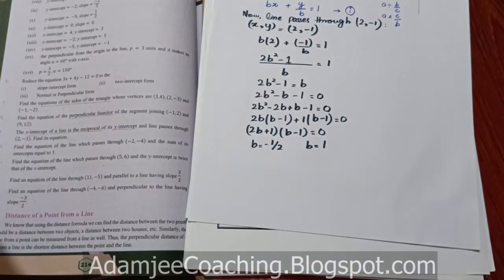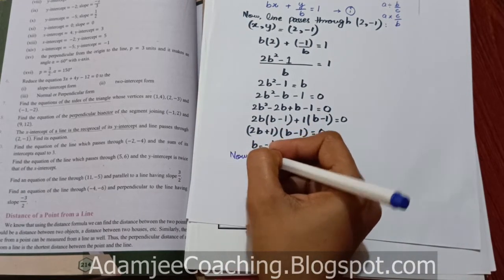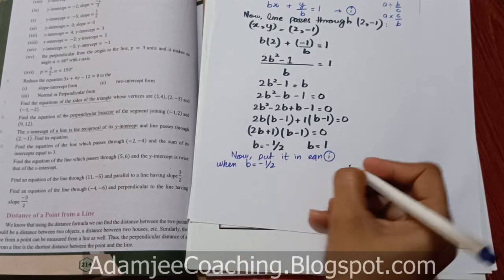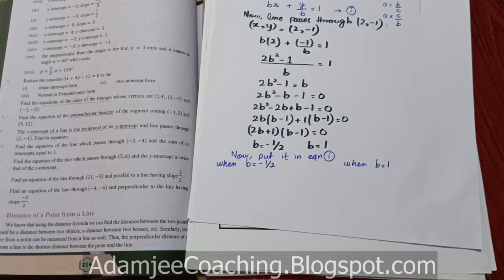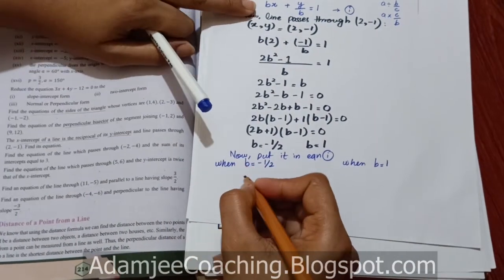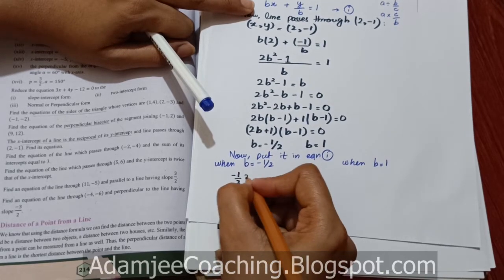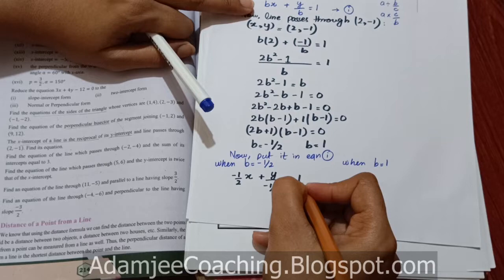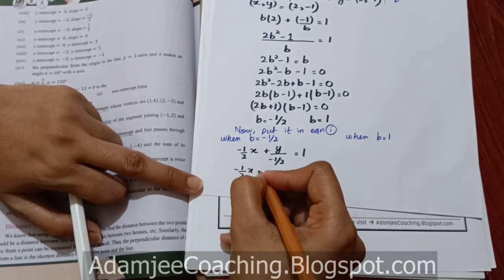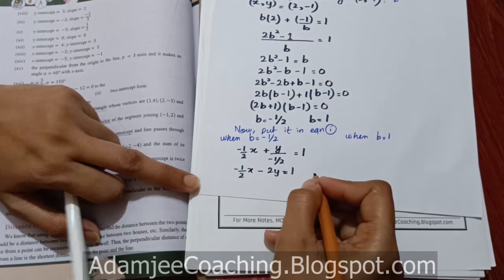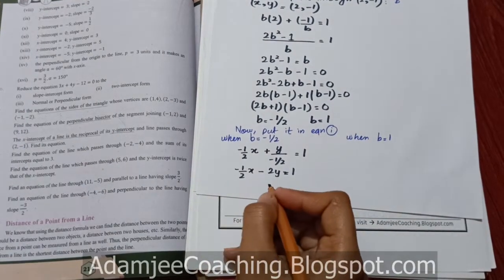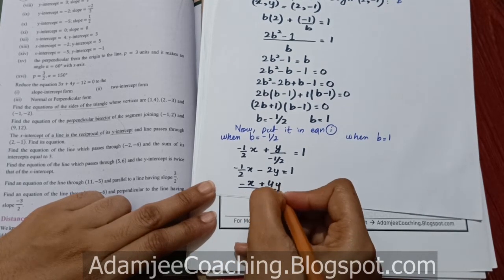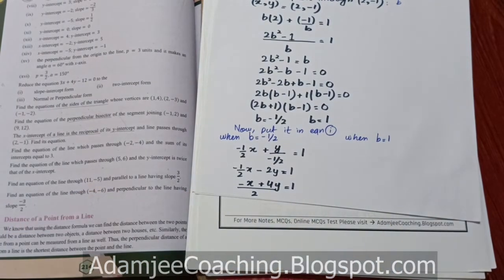Equation 1 میں put کریں۔ When b equals to minus 1/2: bx + y/b میں b = minus 1/2 ڈالیں تو minus(1/2)x plus y/(minus 1/2) equals to 1، جو simplify ہو کر minus(1/2)x minus 2y equals to 1 بنے گا۔ آگے multiply by 2: minus x minus 4y equals to 1 یا x plus 4y plus 2 equals to 0 — یہ first equation۔